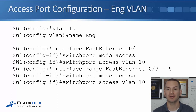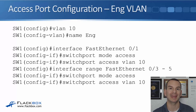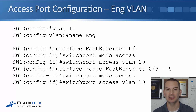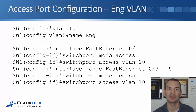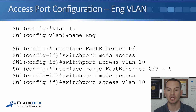We also need to put interfaces FastEthernet 0/3 to 0/5 into the VLAN. Rather than repeating these commands for each individual port, we can configure a range of ports. We say 'interface range fastethernet 0/3-5' — you have to use this exact format; if you try 'interface range fastethernet 0/3 to 0/5' it will give you an error. We then say 'switchport mode access' and 'switchport access vlan 10'. That completes our engineering VLAN configuration.